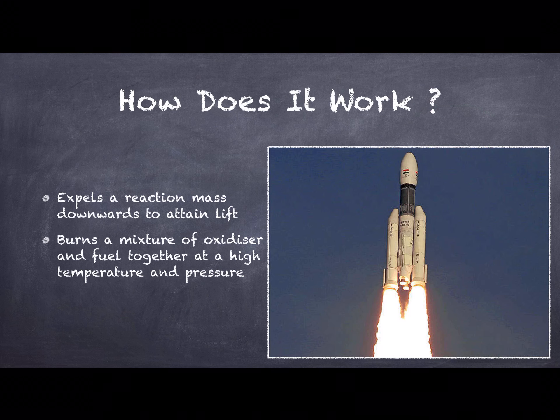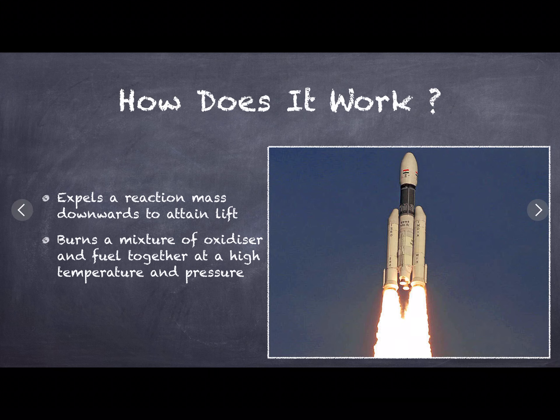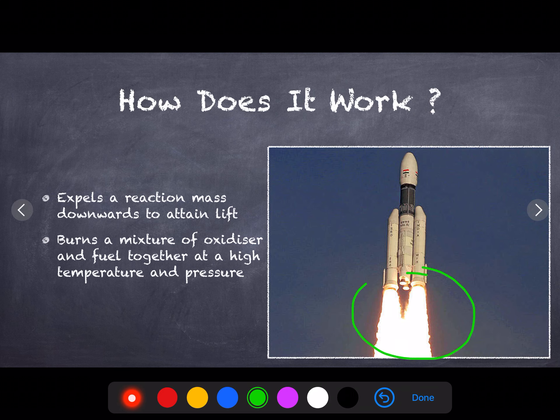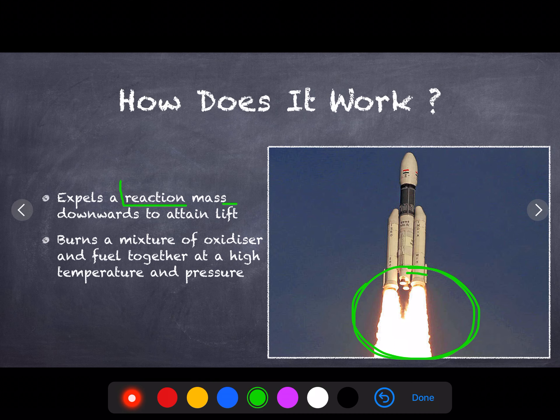Now let's move on to how does it work. Right here on the right you can see we have the GSLV Mark 3, an ISRO rocket. It's burning some fuel at the bottom. This fuel is basically the reaction mass. The reaction mass is used to propel the rocket upwards. Whenever